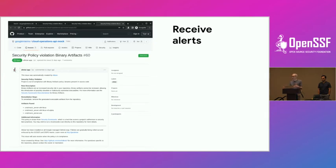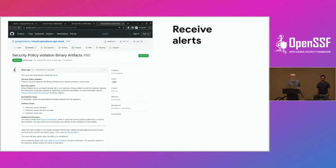A big policy right now is branch protection. GitHub has good settings for enforcing that on certain branches, where commits only go in through pull requests with required reviews. AllStar can apply that at scale on all your repositories for whatever settings you pick, and make sure it stays on. For policies without a directly fixable setting, AllStar raises GitHub issue alerts. So if you have a thousand GitHub repositories, each repository owner can get an alert to fix something like removing a binary artifact or setting up a security.md.